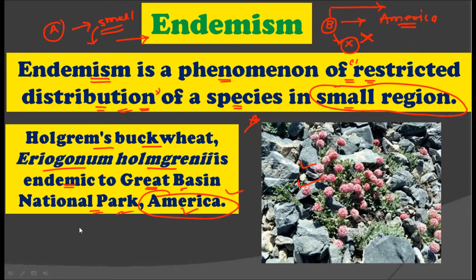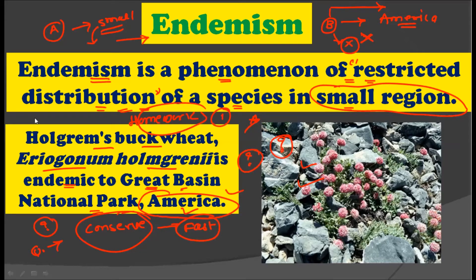These species are very important to conserve right away because they already have a very small habitat, and in today's world habitat destruction is going on at a very fast rate. That is why we have to conserve endemic species in an urgent way.